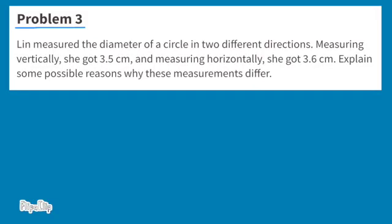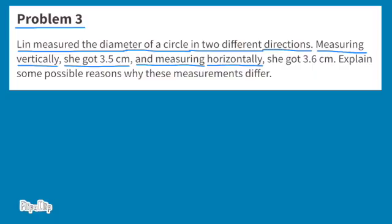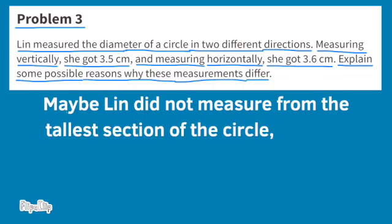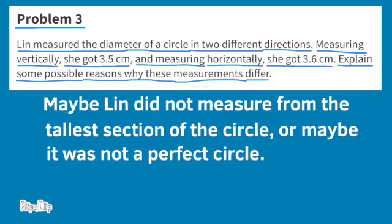Problem number three. Lynn measured the diameter of a circle in two different directions. Measuring vertically, she got 3.5 centimeters, and measuring horizontally, she got 3.6 centimeters. Explain some possible reasons why these measurements differ. Maybe Lynn did not measure from the tallest section of the circle, or maybe it was not a perfect circle.